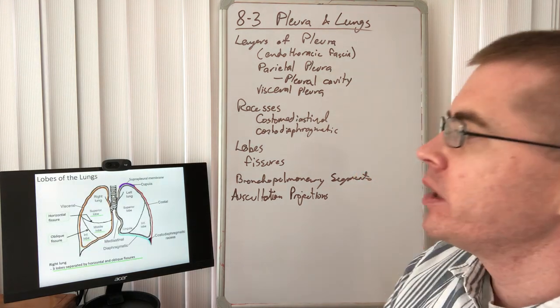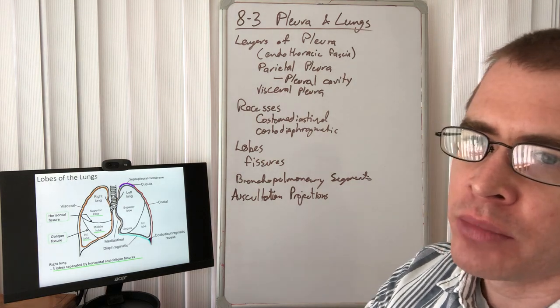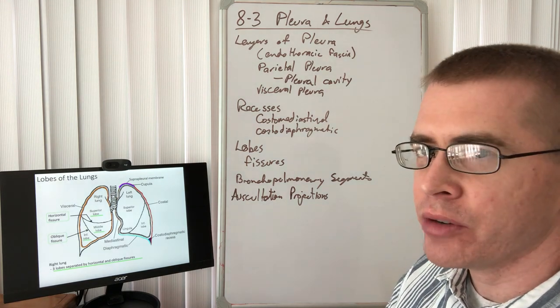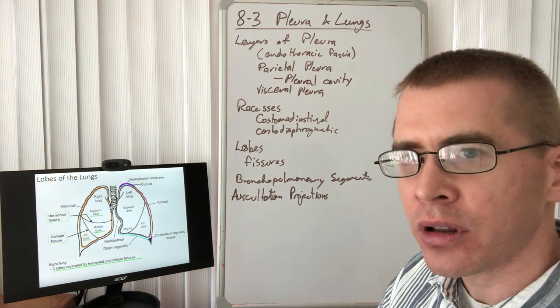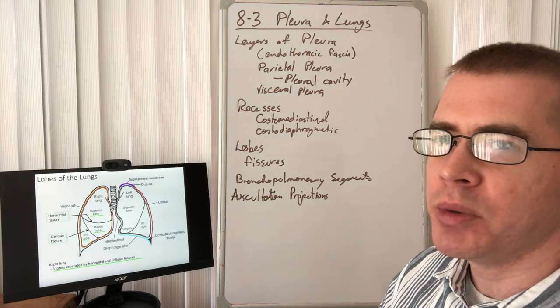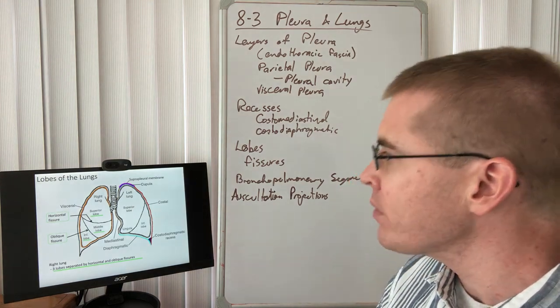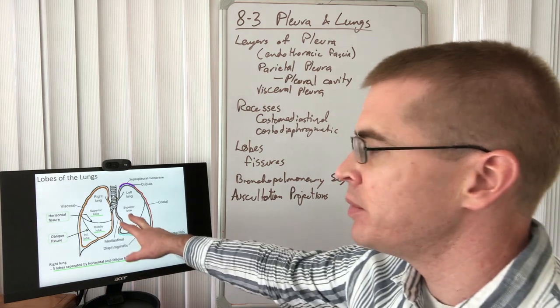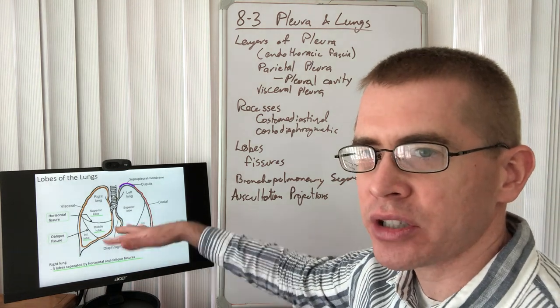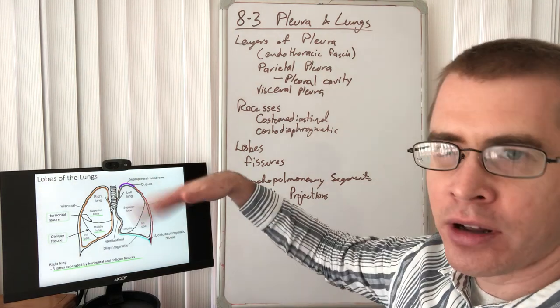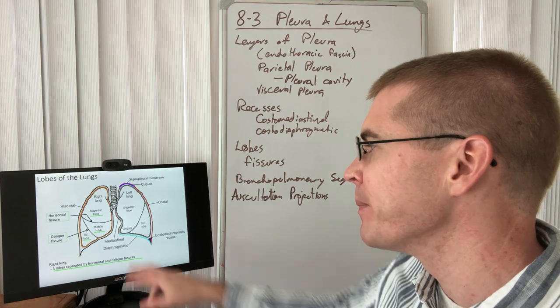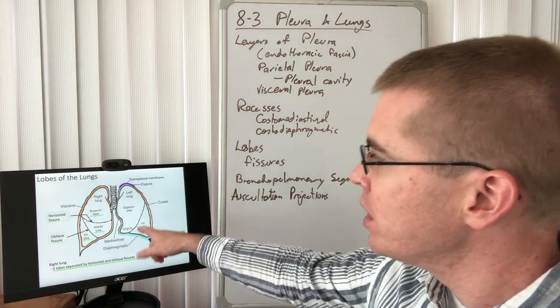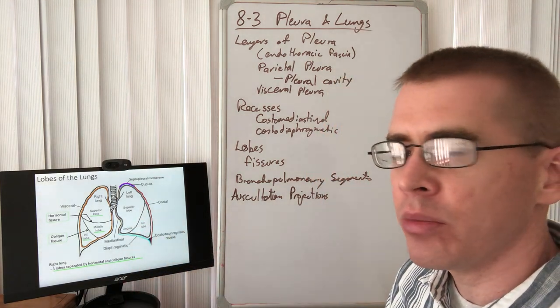Moving on, the lungs themselves are separated by a number of fissures. The right lung is separated by two fissures, a horizontal and an oblique fissure. Because of this, the right lung has three lobes: a superior, middle, and inferior lobe. The left lung only has two lobes because it is only separated by one oblique fissure. However, the left superior lobe has a sub-region called the lingua, which is this tongue-shaped portion. The lingua covers the apex of the heart. The lingua is analogous to the middle lobe of the right lung.